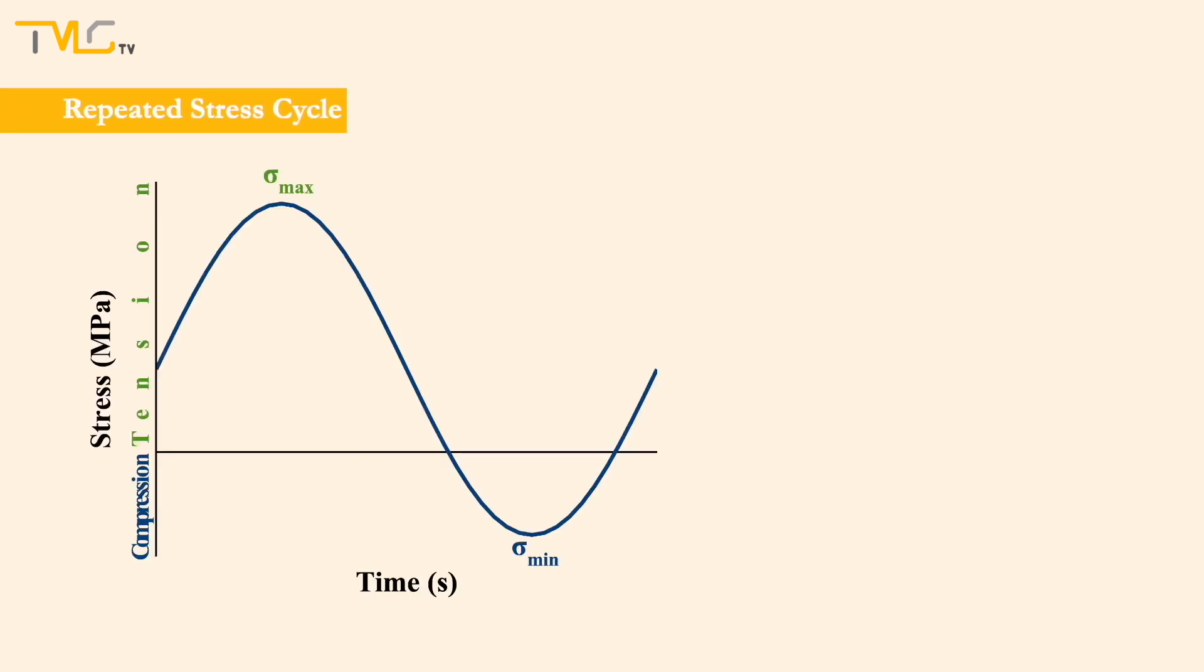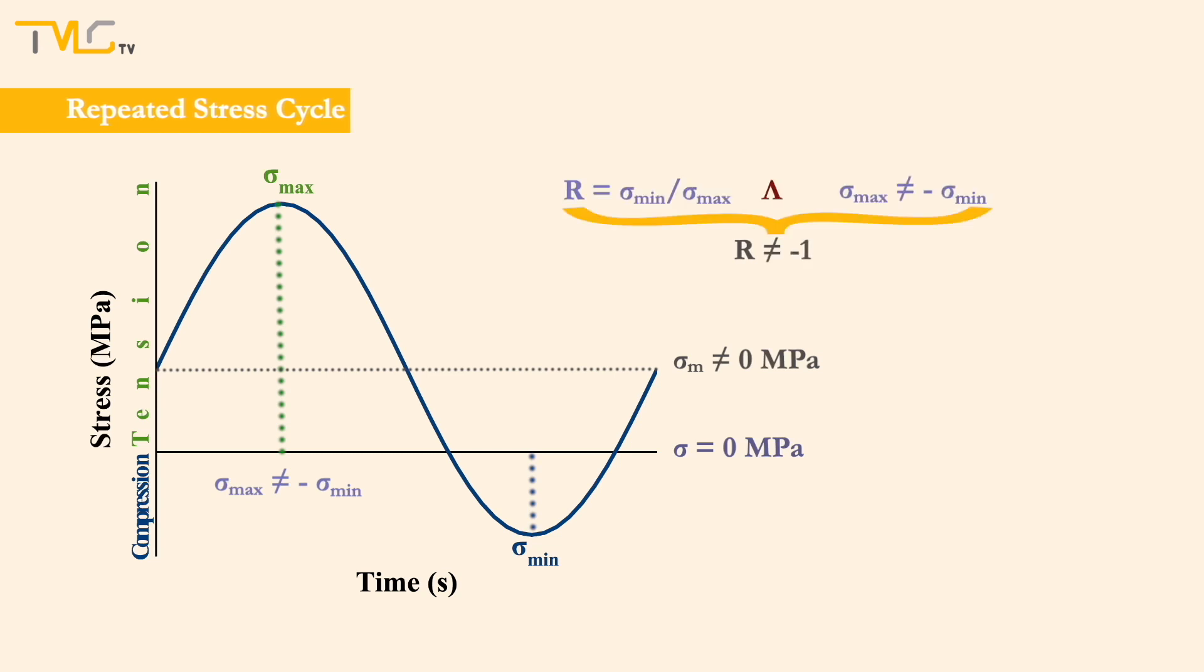In repeated stress cycles, the maxima and the minima are asymmetrical relative to the zero stress level, as shown in the image on the screen. Here, the mean stress and the stress ratio are equal to any value other than 0 MPa and minus 1 respectively.